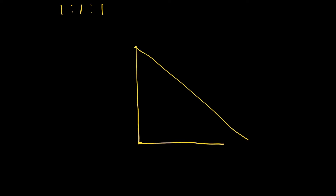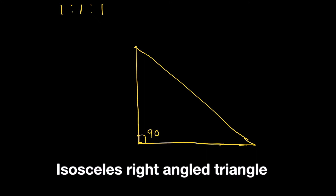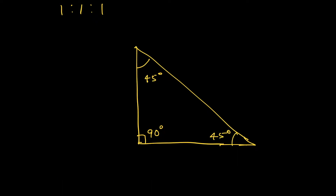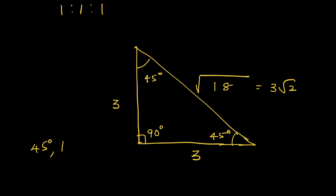In an isosceles right-angled triangle, this angle is 90 degrees, and since it's isosceles, the other two angles are each 45 degrees. Suppose the two equal side lengths are 3 — then the hypotenuse, using Pythagoras' theorem, will be √(3² + 3²) = √18 = 3√2. So for a triangle with angles 45-45-90 degrees, the ratio of the sides is 3:3:3√2, which simplifies to 1:1:√2.